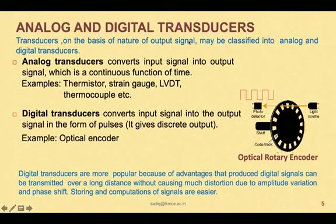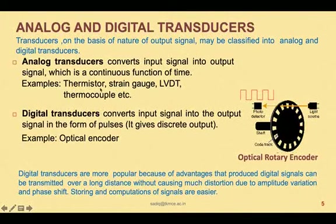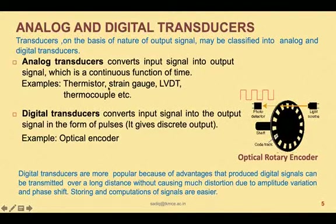Transducers on the basis of the nature of the output signal can be classified into analog or digital transducers. Analog transducers convert the input signal into an output signal which is a continuous function of time — a continuous output. Examples include a thermistor which gives continuous voltage output, a strain gauge where strain causes a continuous change in resistance and voltage, and a thermocouple which behaves similarly.